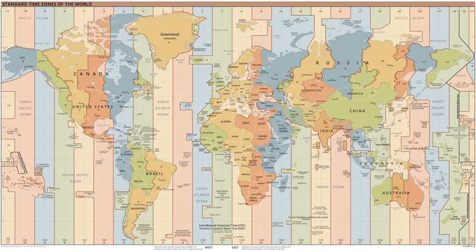UTC is also the time standard used in aviation, for flight plans and air traffic control clearances. Weather forecasts and maps all use UTC to avoid confusion about time zones and daylight saving time. The International Space Station also uses UTC as a time standard. Amateur radio operators often schedule their radio contacts in UTC, because transmissions on some frequencies can be picked up in many time zones. UTC is also used in digital tachographs used on large goods vehicles under EU and AETR rules.